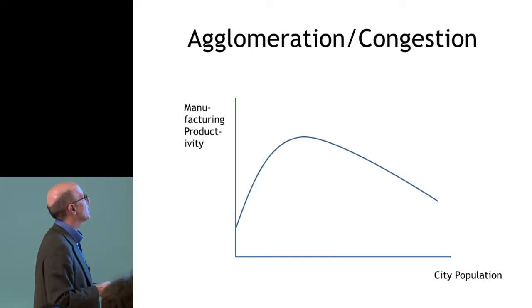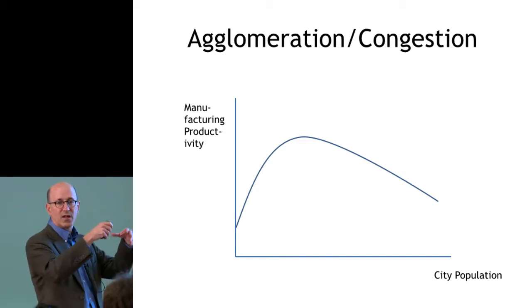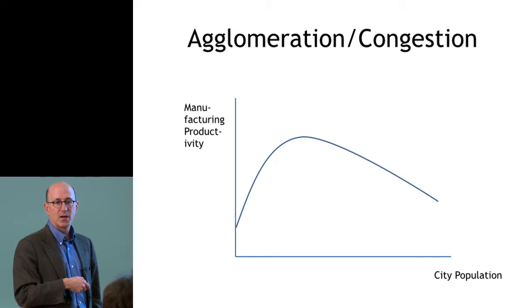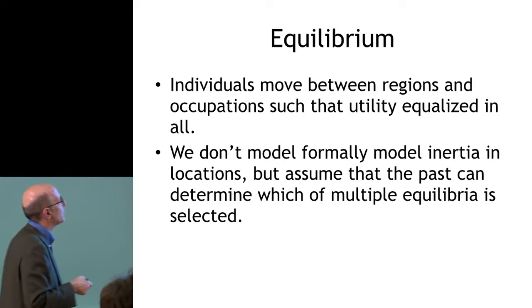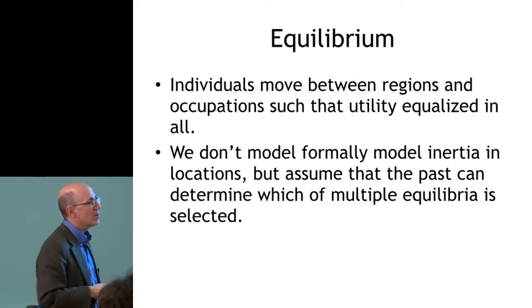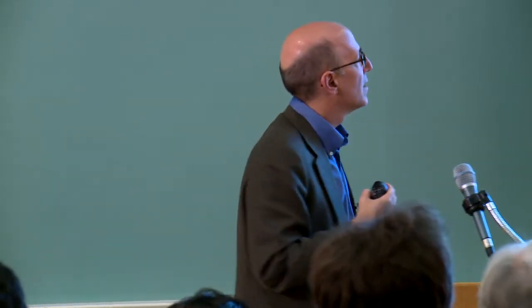Manufacturing productivity has an inverted-U shape with city population: as a city grows, agglomeration benefits raise wages, but once the city passes a certain size, congestion outweighs agglomeration benefits. In the pre-development era, agricultural productivity is low so most people work in agriculture and transport costs are high, so there's no inter-regional trade. In the developed end state, agricultural productivity is high so most people work in manufacturing and live in cities, and transport costs are low allowing inter-regional trade.